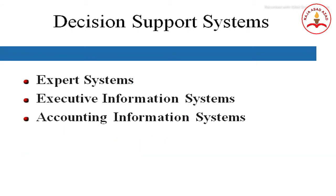Decision support systems include the expert system, executive information system, and accounting information system. An expert system is a knowledge-based information system that uses its knowledge about a specific application area to act as an expert consultant to end-users. Unlike a DSS, an expert system requires the development of a knowledge base — the specific knowledge an expert possesses in the decision area — and an inference engine, which is the process by which the expert makes decisions.